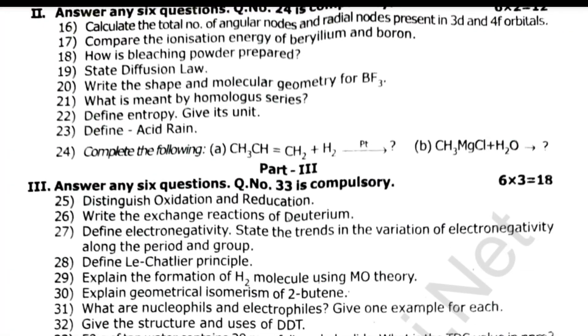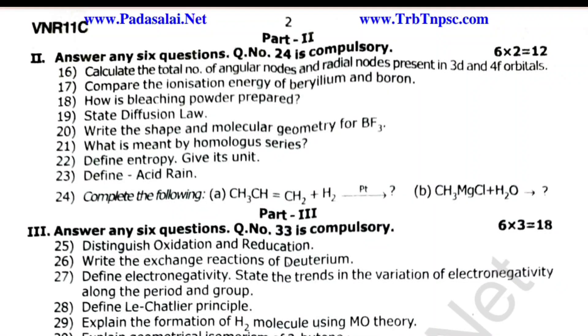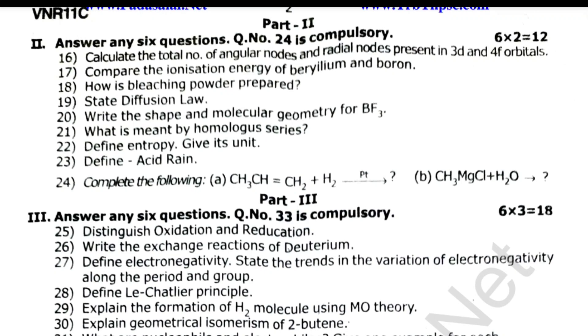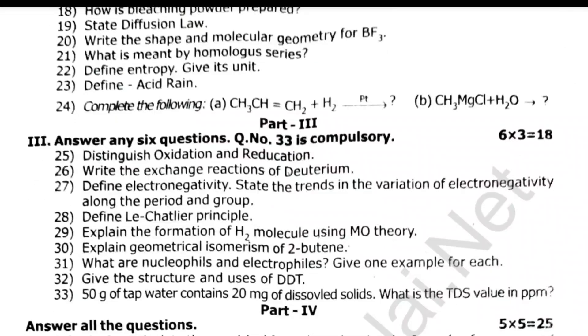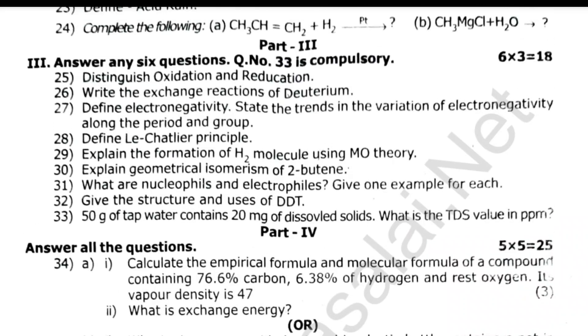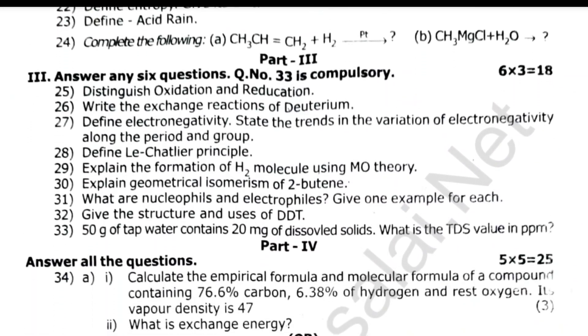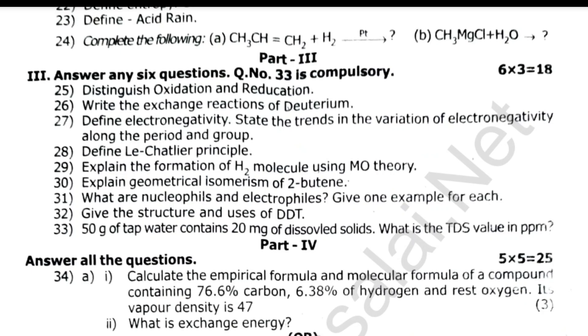Part 4, 5 marks. Question 34 is compulsory. 50 grams of tap water contains 20 milligrams of dissolved solids. What is the TDS value in ppm? Calculate the empirical formula and molecular formula of a compound containing 76.6% carbon, 6.8% hydrogen. Its vapor density is 47. What is exchange energy?